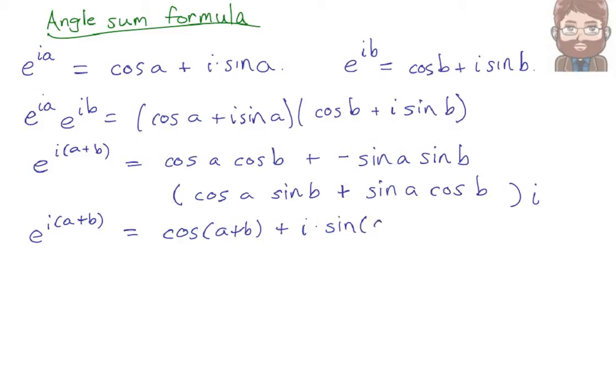Now, an interesting thing: when two complex numbers are equal, their real and their imaginary parts must also be equal. The real part, this first term, is cosine of a plus b, which matches up with this part here. And the imaginary part is sine of a plus b, which must therefore be equal to this part.